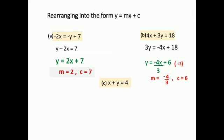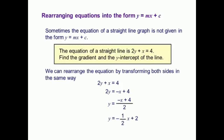Last examples. x plus y equal to 4: directly, y is equal to minus x plus 4, so m is equal to minus 1 and c is equal to 4. Next, 2y plus x equal to 4. Rearrange: 2y equal to minus x plus 4. Divide everything by 2: y equal to minus one-half x plus 2. So m is equal to minus 1 over 2 and c is equal to 2.